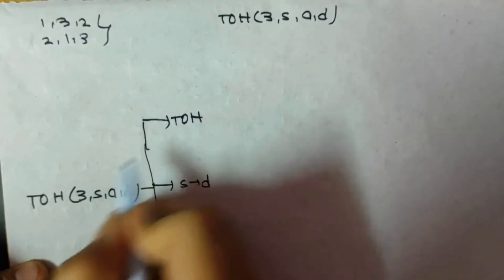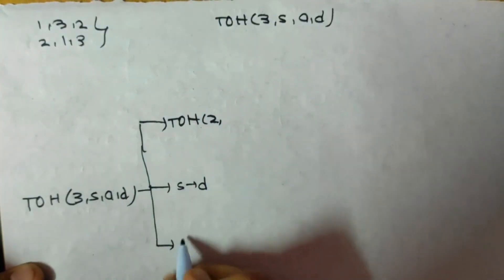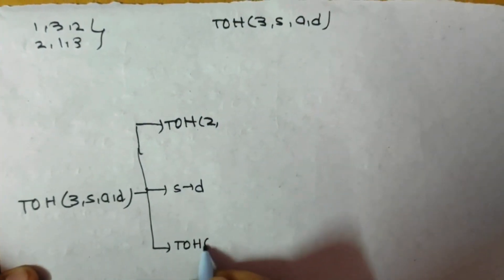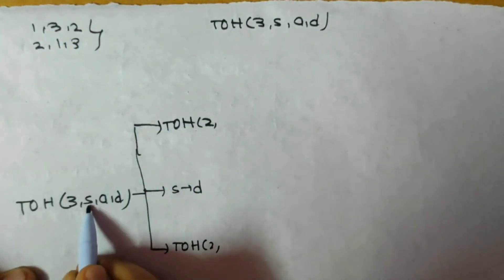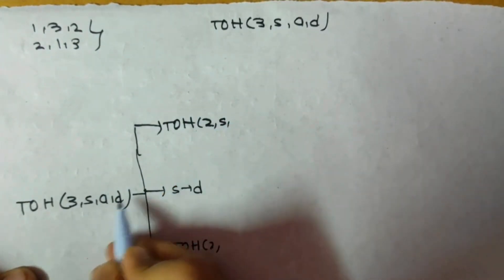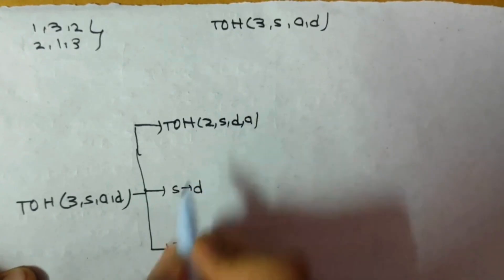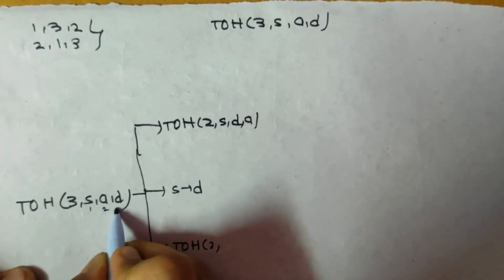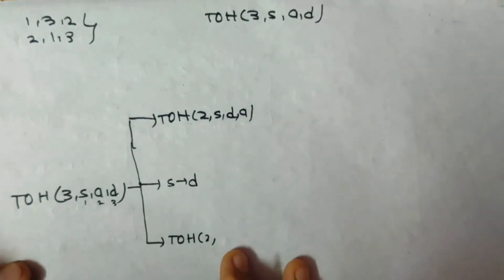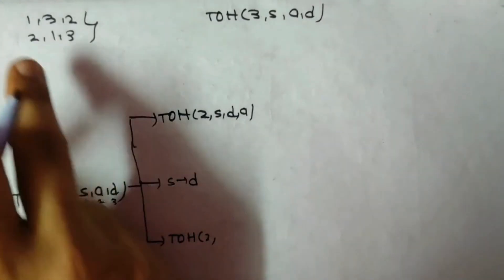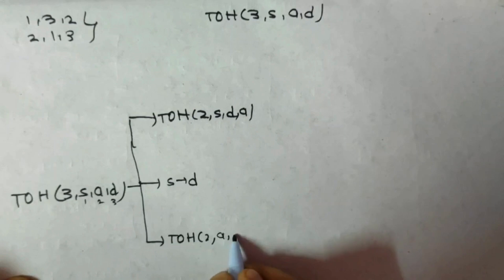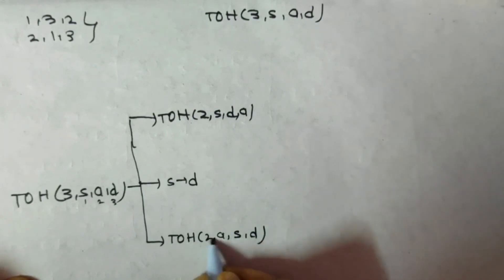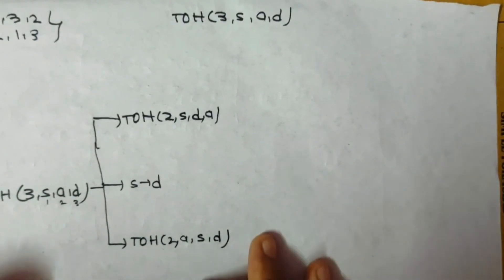In the above portion, follow sequence 1-3-2: first decrease one, so 3 minus 1 gives 2. Here, 1 is S, 3 is D, and 2 is A. In the below portion, follow sequence 2-1-3: 2 is A, 1 is S, and 3 is D. That is the first level done.